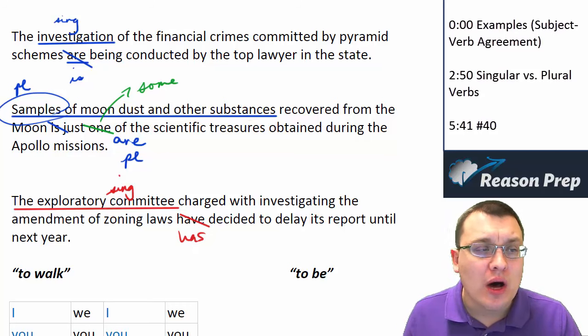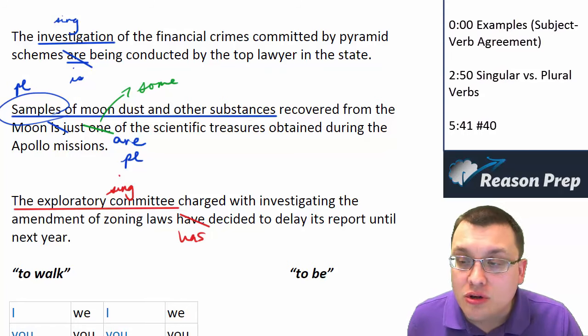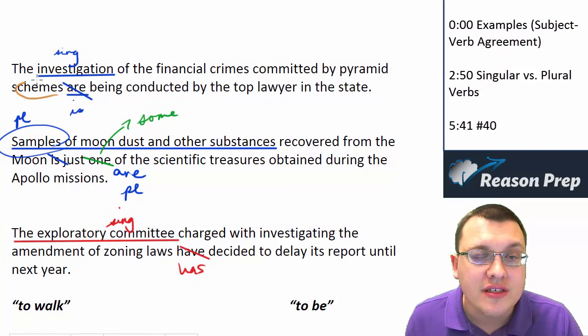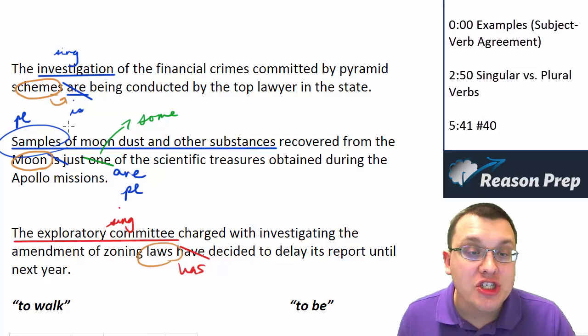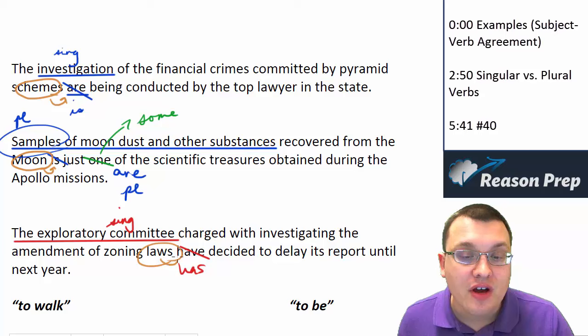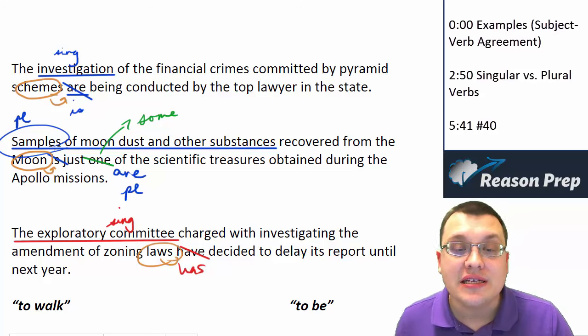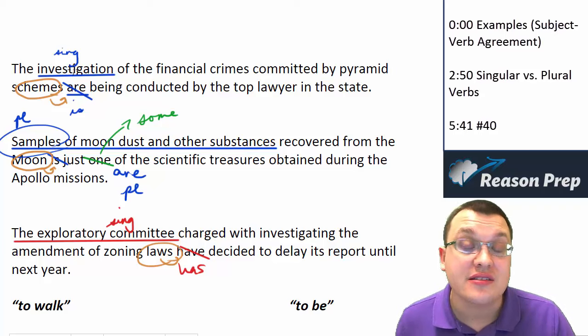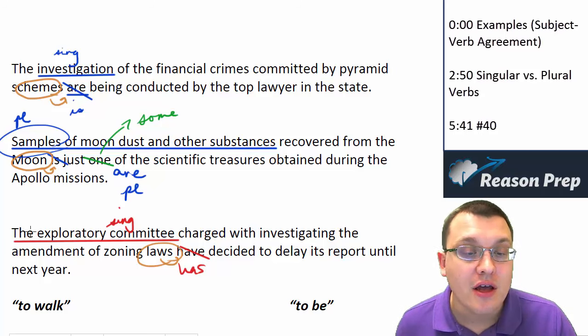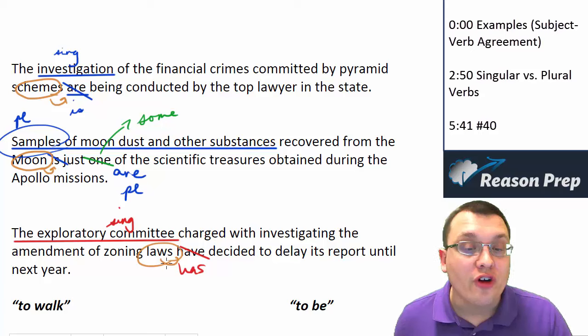Notice in all these examples why they're especially tricky is the noun closest to the verb in all of these cases. In the case of the first one, it was schemes; moon, and laws seem to match with the verb in terms of numbers. Schemes are, moon is, laws have. The issue is these are not the subjects. The subjects are earlier in the sentence. Typically, the first noun of the sentence, such as investigation, samples of moon dust, the exploratory committee. The verb has got to agree with the subject, not with the noun that it's closest to.